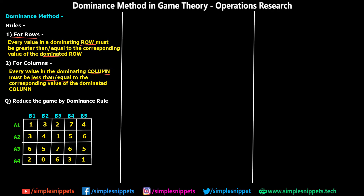In this question you can see we've been given a payoff matrix wherein we have player A and player B. The blue ones are player B and the green one is player A, and we have to reduce the game by using dominance rule. You can use the maximin and minimax method on this payoff matrix and you'll get the saddle point — so it is a kind of pure strategy game — but we are going to be using the dominance rule to see how this entire numerical goes. We will apply these two rules to reduce the matrix to smaller and smaller chunks until we reach the final answer.